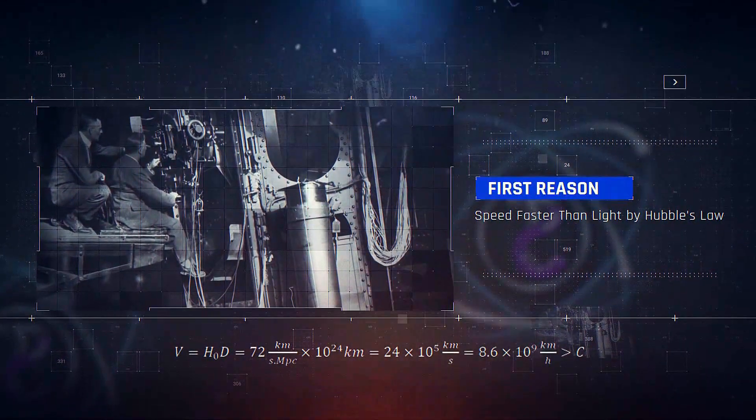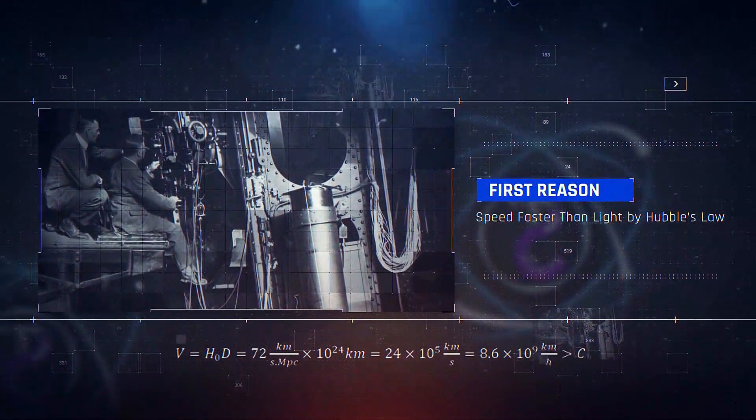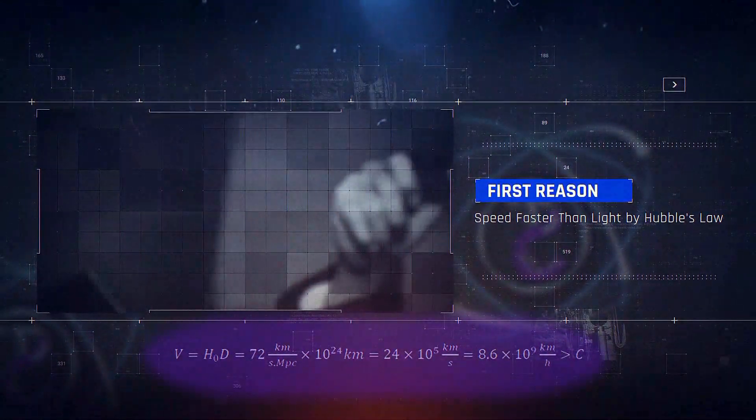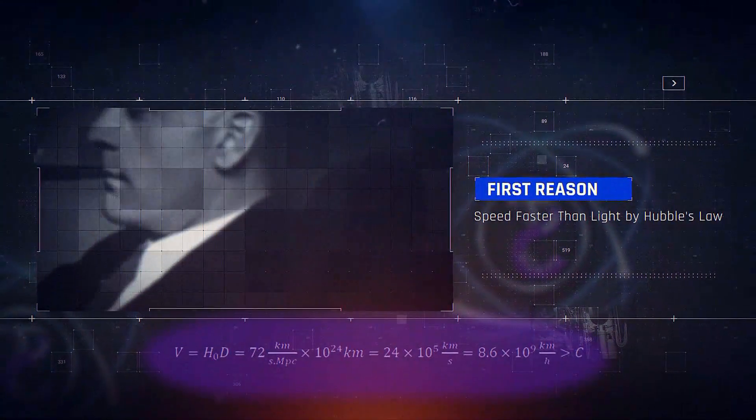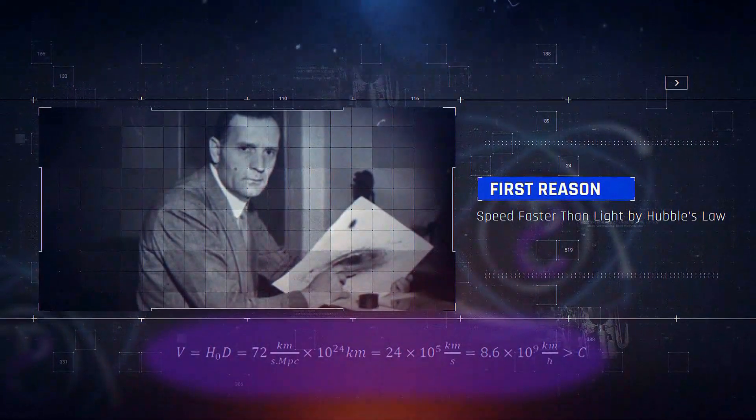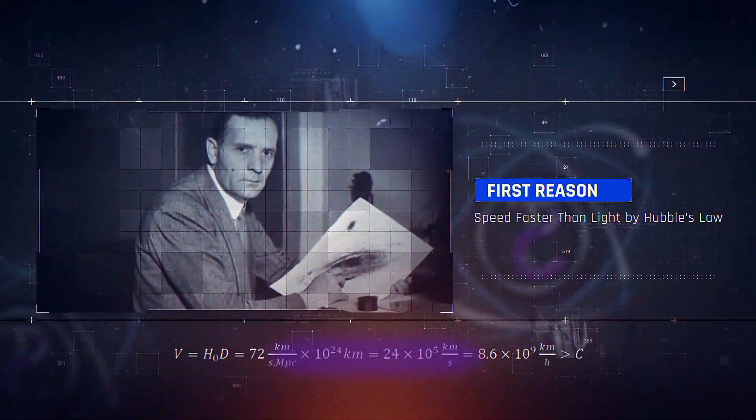The observable boundary of the universe is 10 to the power of 24 km. If we input that in Hubble's formula, we perceive that the galaxies located at this distance are currently moving at speeds faster than the speed of light.